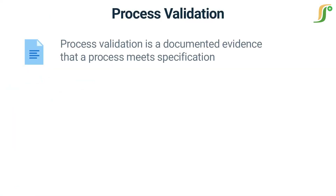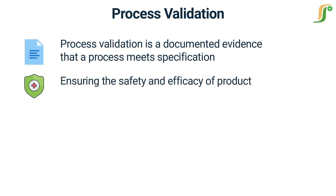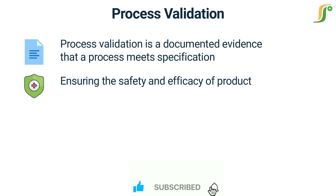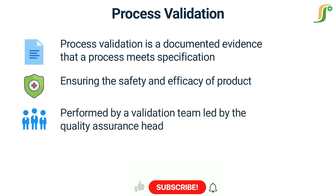Process validation is documented evidence that a process, such as manufacturing or packaging, consistently produces a product that meets predetermined specifications and quality attributes. It is a crucial step in ensuring the safety and efficacy of pharmaceutical products. It is a step-by-step procedure designed to ensure that a manufacturing process can consistently produce quality products, and is performed by a validation team led by the quality assurance head.